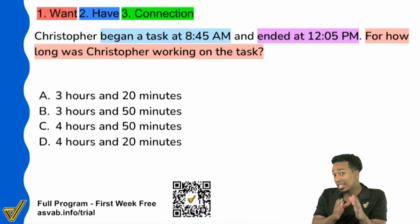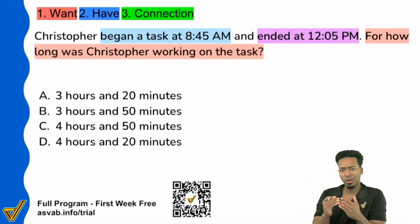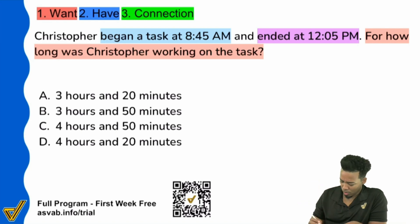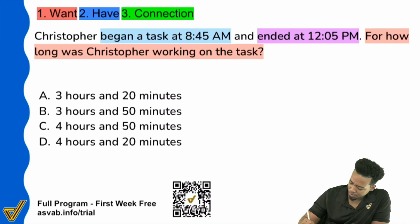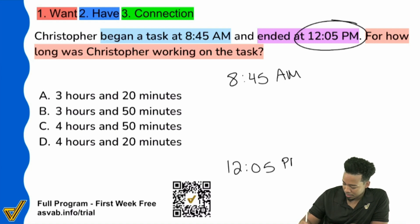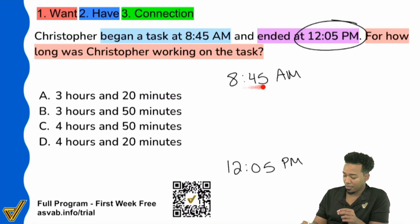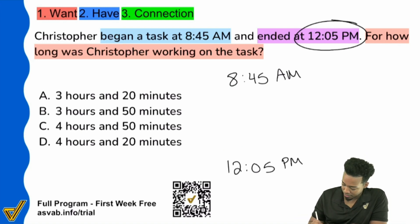But another — and easier — way I would suggest is counting up instead of subtracting to find the time in between. Starting from 8:45 a.m., if I'm trying to get to 12:05 p.m., here's how we can get there. First, I'm going to get as close to 12 o'clock as I can. From 8:45, I can jump to 9:45, 10:45, 11:45.